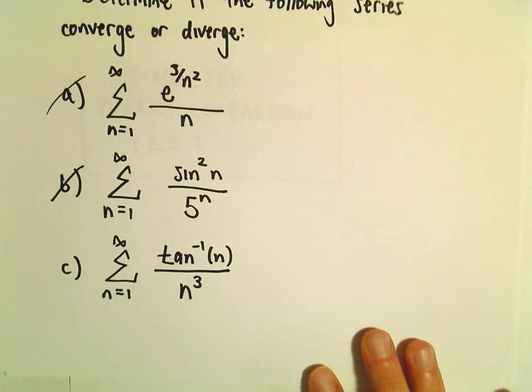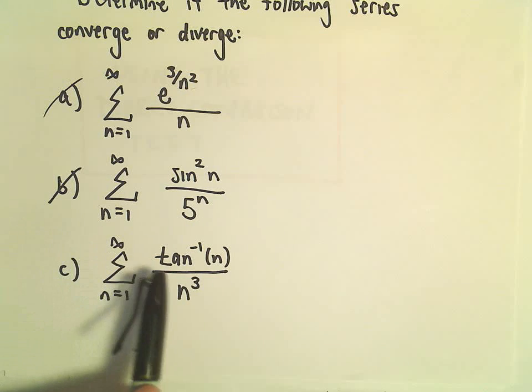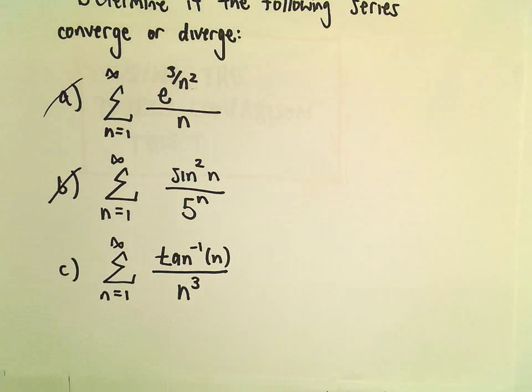All right, so one more example here using the direct comparison test. Part C: we've got the series from n equals 1 to infinity of arctangent of n over n cubed.